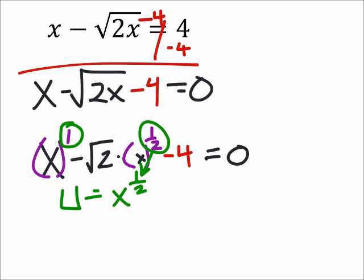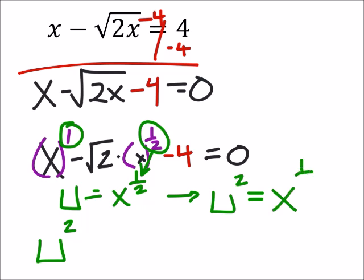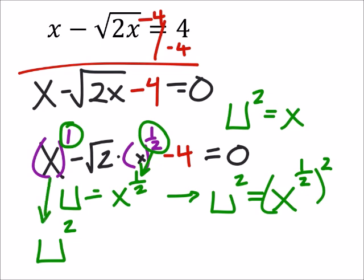Let's see what this looks like. Our first term — that was x to the power of 1, and u is x to the power of 1/2 — that would be u squared. So another way we can look at this is to say that if I double just the exponent, I would have x to the power of 1/2 squared, which makes u squared equal to x. And right here, this is what we chose u to be: u is x to the power of 1/2.